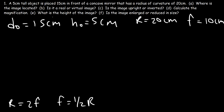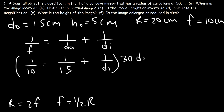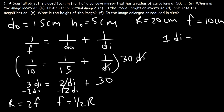Now let's use the mirror equation to calculate dI. 1/f equals 1/dO plus 1/dI. So f is 10 and dO is 15. Multiply both sides by 30dI — since 15 and 10 both go into 30. So 1/10 times 30dI gives 3dI; 30dI divided by 15 gives 2dI; and 30dI times 1/dI gives 30. Subtracting 2dI from both sides: 3dI minus 2dI equals dI, so dI equals 30 centimeters.